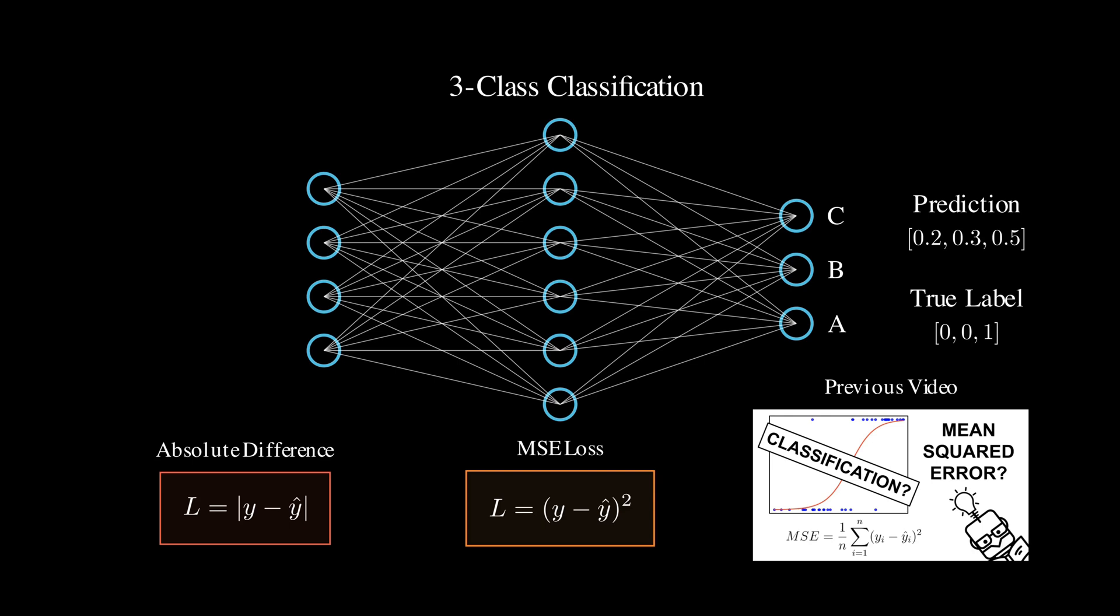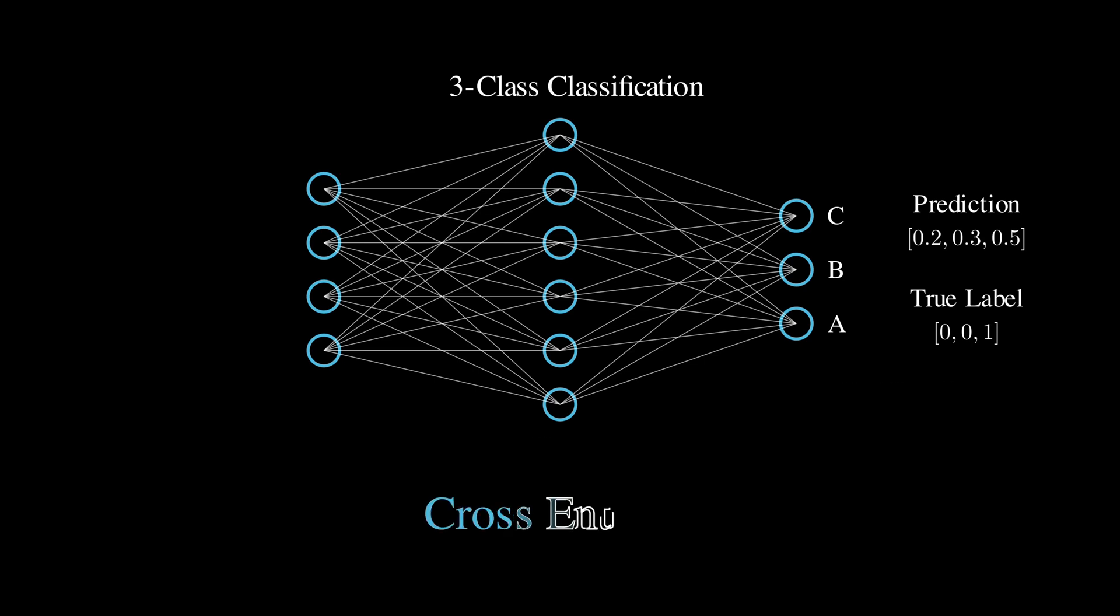Essentially, these loss functions don't create strong enough gradients when our predictions are confidently wrong. This is where cross-entropy comes in.